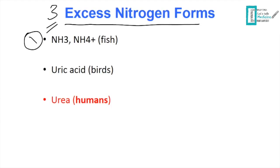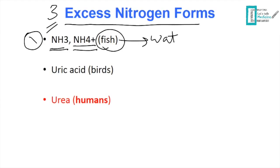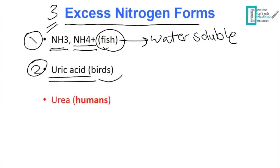The first form is ammonia and ammonium ions, found for example in fish. These are water soluble, which makes them easily diffused in water. The second form is uric acid, found for example in birds. This is water insoluble.